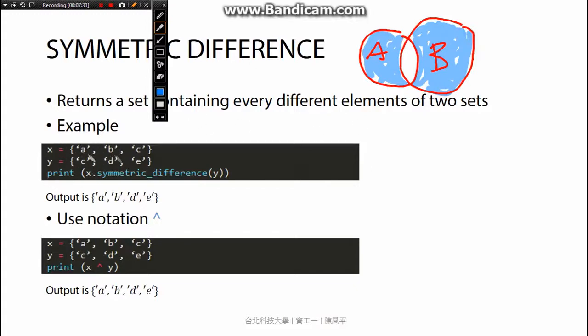Okay, example, this is how it writes. x equals y equals a, b, c, c, d. And symmetric difference y. The output is a, b, d, and e - a, b, d, e.